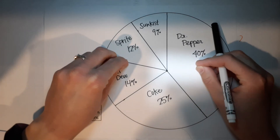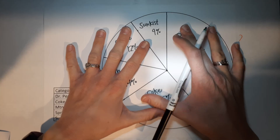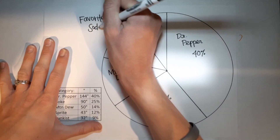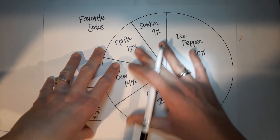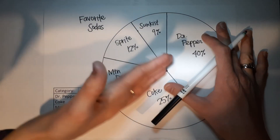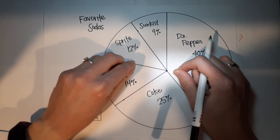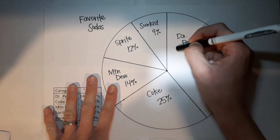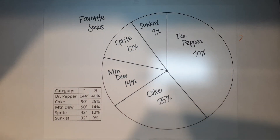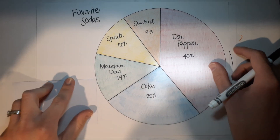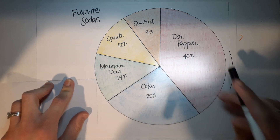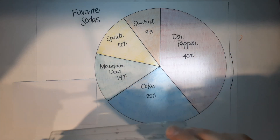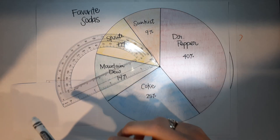Not quite done — graphs always need a title. I'm naming this 'Favorite Sodas.' If you polled a specific school or group, you might add that to the title. The last step: color it in — that's the best part of a pie chart. I won't make you watch me color for 15 minutes, so here's the finished product. Look at that — we did it! Now go get your homework done, maybe grab a protractor at the store, and have sweet dreams of math.